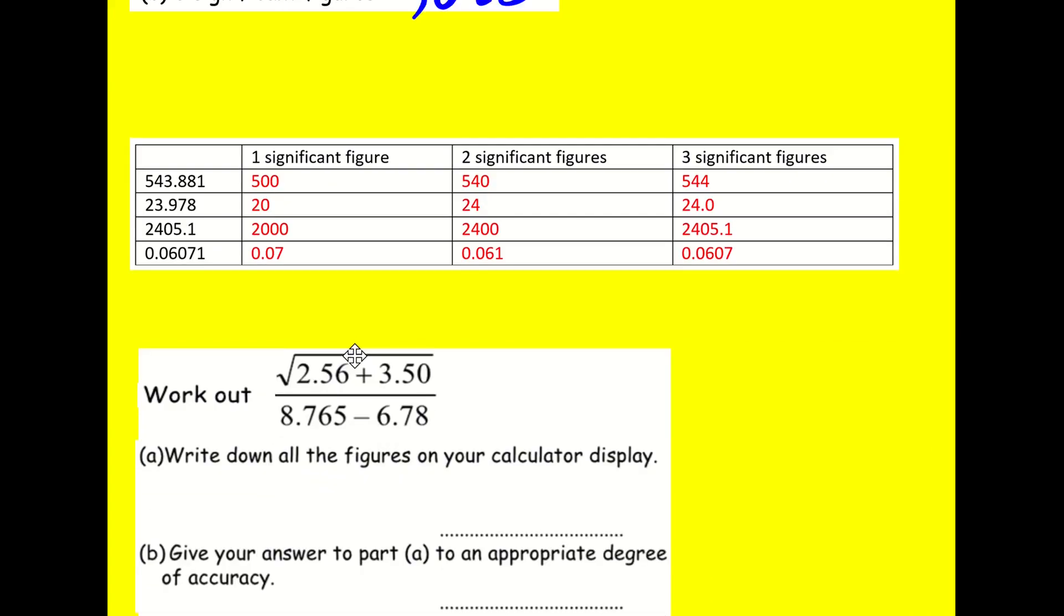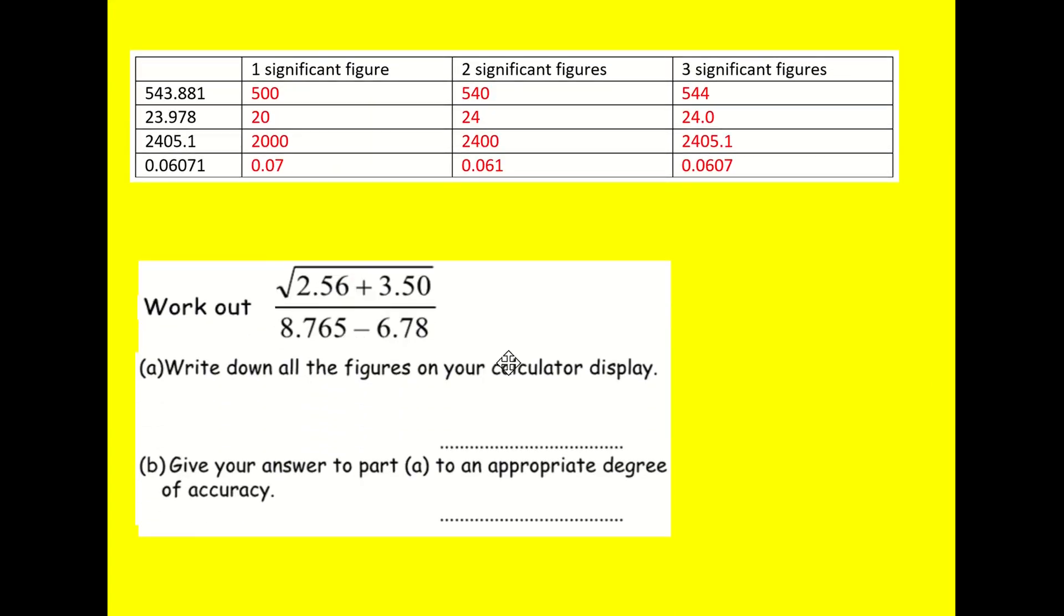We're going to look at one final example. So work out this number here on your calculator. If I was doing this question, well I am doing this question, then I would first of all get the fraction button out on my calculator. And then it will take you to the top and you can write the square root button and then you can write this in separately. This is going to be the easiest way to deal with this question. And then you'll go down to the denominator and you can just write. So you can basically type it in exactly as it looks.